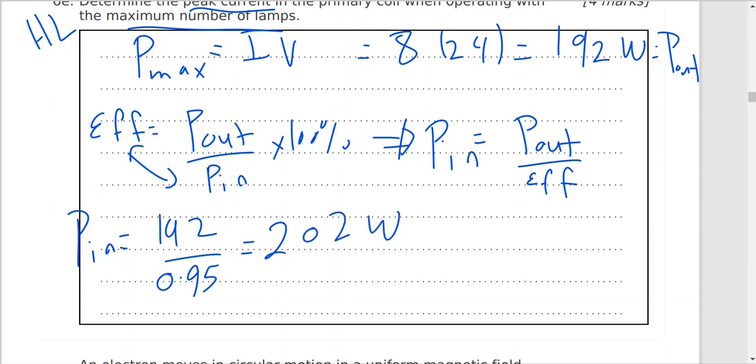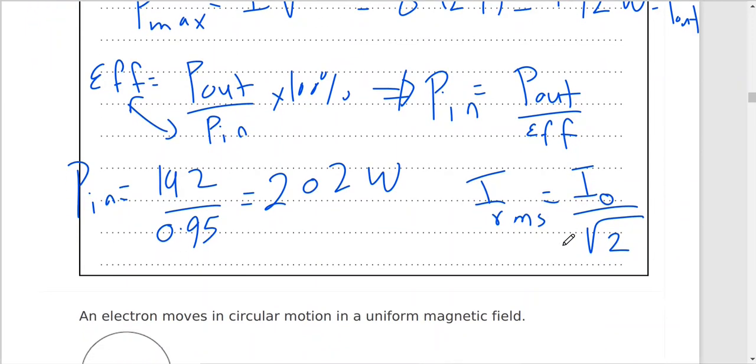Now from the definition of I RMS, it's the peak current or the maximum current divided by the square root of two. I RMS will equal power P in divided by V RMS. P in is 202 divided by V RMS is 240, and this will give us 0.84 amp.